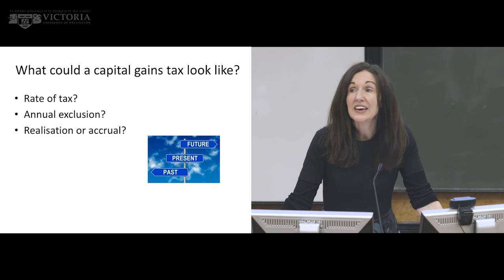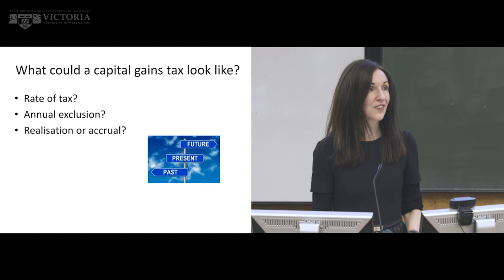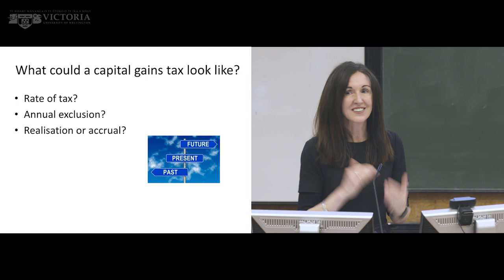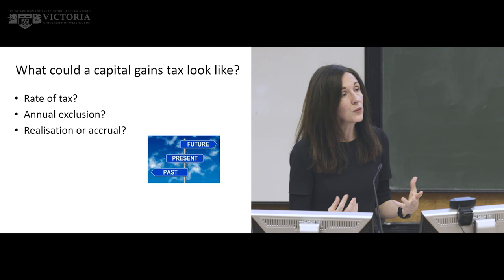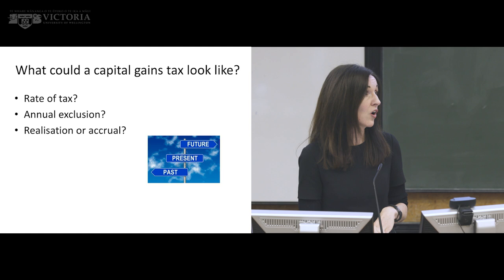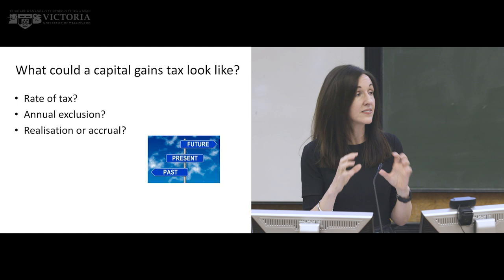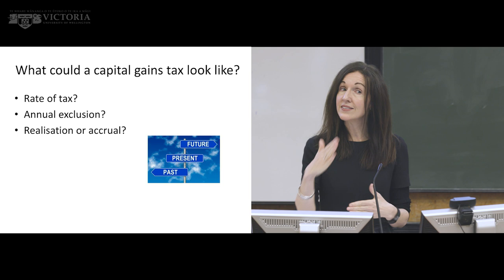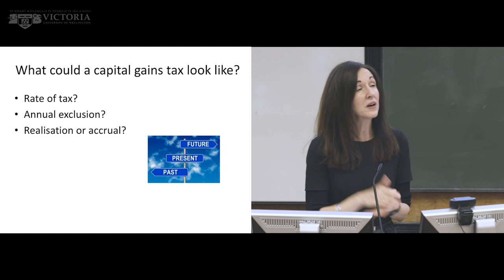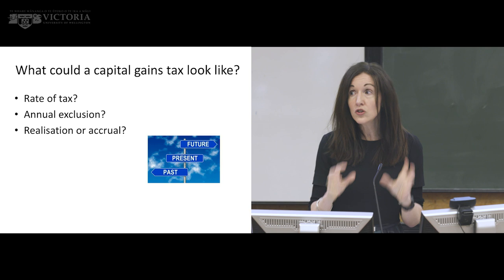Usually, capital losses are not able to be used to offset other income tax payable — usually they're used to offset capital gains. So to the extent that you have a capital gain and a capital loss, they offset each other and capital losses reduce the amount of capital gains tax you would pay. For the remainder of this discussion, I want to talk about the various things we need to know about for an informed discussion on capital gains taxes. Let's start with the rate of tax. There is no one right rate of tax for capital gains — different countries do different things. There's some logic to having the capital gains tax rate at the same as the income tax rate of the taxpayer. In New Zealand, the highest income tax rate is 33%, and many countries have their capital gains tax rate at the same rate as your marginal income tax rate.